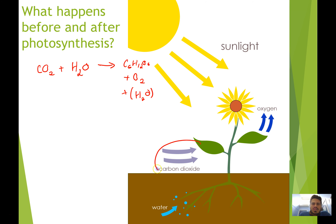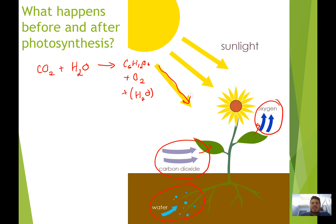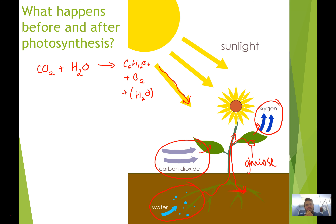Carbon dioxide moves into the leaf directly through the stomata, and oxygen moves out of the leaf also through the stomata. Water moves into the plant through the root system. The plant collects sunlight in the chlorophyll of the leaves, and glucose is produced inside the leaf. But how do we get water up the plant? We don't perform photosynthesis in the root system, and how do we get glucose down to the roots where it doesn't naturally occur?